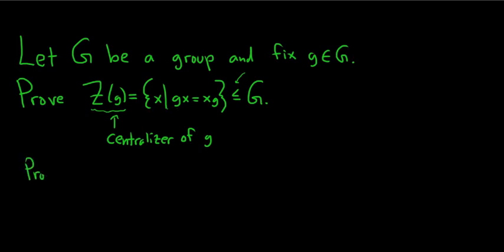Let's go ahead and go through the proof. To prove a set is a subgroup, we have to satisfy three criteria. The first one is to show that our subgroup H is not empty.